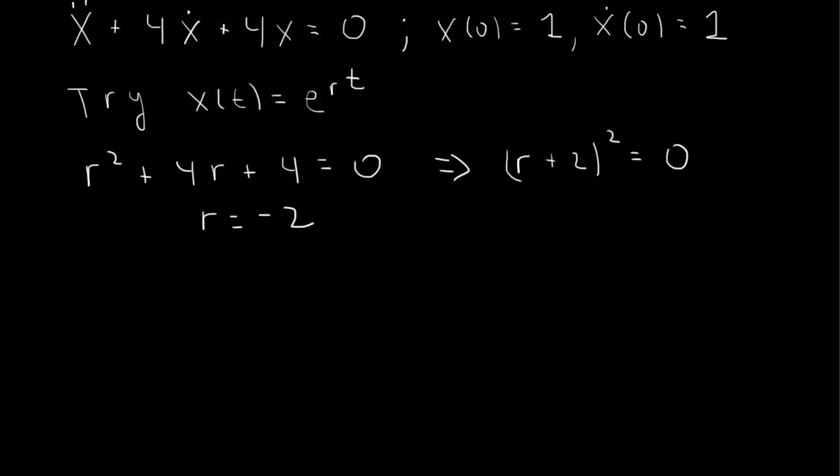So the solution, the general solution here, will be x of t equals e to the minus 2t, because r is minus 2 in the solution here, times a constant. And then the missing solution is t times the previous solution, so plus another constant times t.